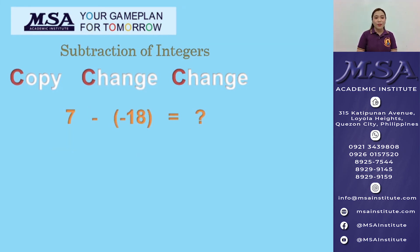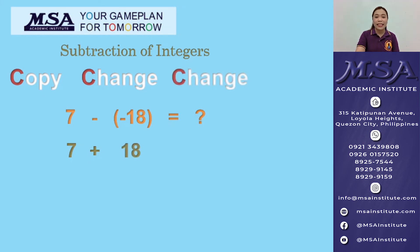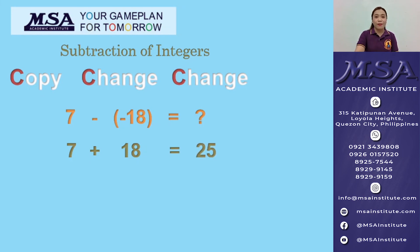Next one, we have 7 minus negative 18. So copy the minuend, change the operation, and then change the sign of the subtrahend from negative 18 to positive 18. So we now have 7 plus 18, which is equal to 25.